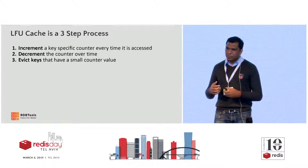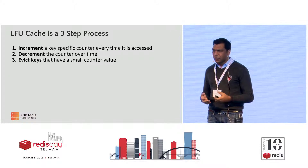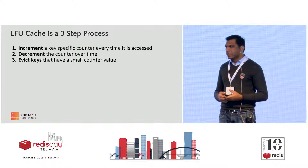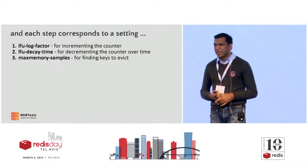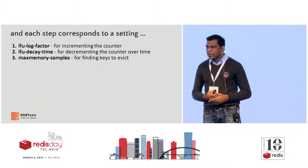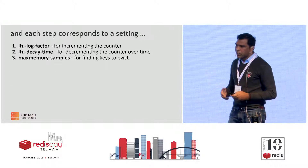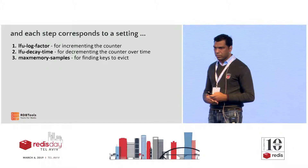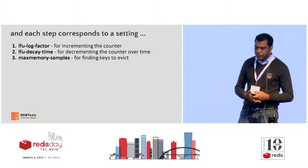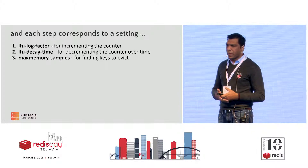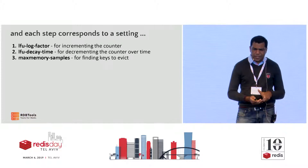Alina spoke a lot about the third step, so I'll briefly touch on it. Mostly this talk is about how do you increment the counter, how do you decrement the counter, and what levers does Redis provide to optimize LFU. There are essentially three configurations once you enable LFU: the LFU log factor, which controls how the counter is incremented; the decay time, which tells Redis when and how to decrement the counter; and max memory samples, which Alina spoke about regarding which keys to evict.